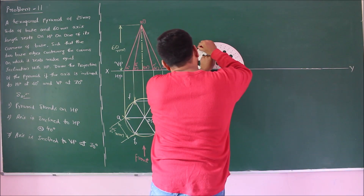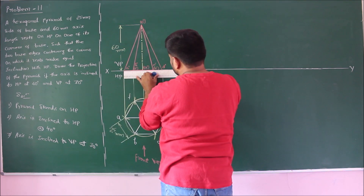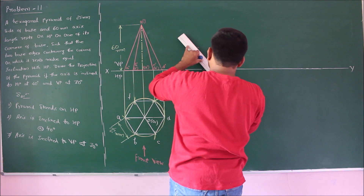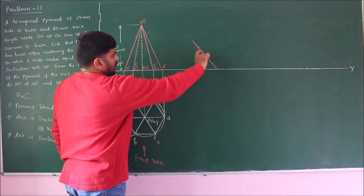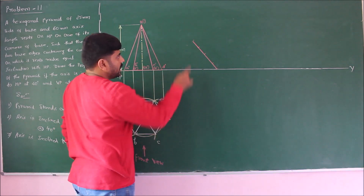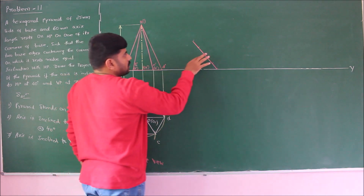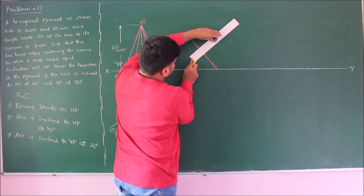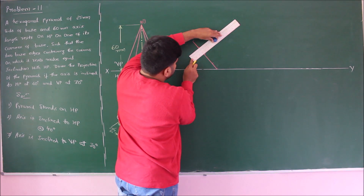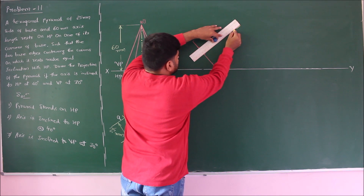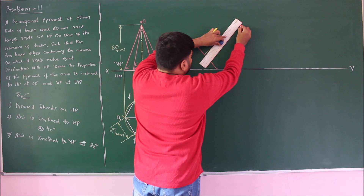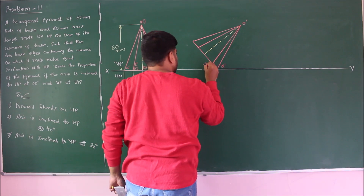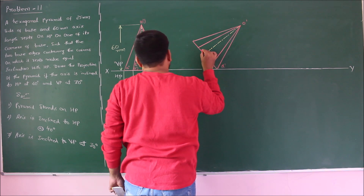Mark 50 degrees, measure the base length, and note down all corner lengths. Transfer the base at an angle of 50 degrees to HP and mark the salient corners. Mark the axis perpendicular to this line — the axis length is 60 mm, drawn perpendicular to the baseline. From the apex, join the corners: o prime, d prime, c prime, e prime (invisible), o1 prime, b prime, f prime (invisible), and a prime.